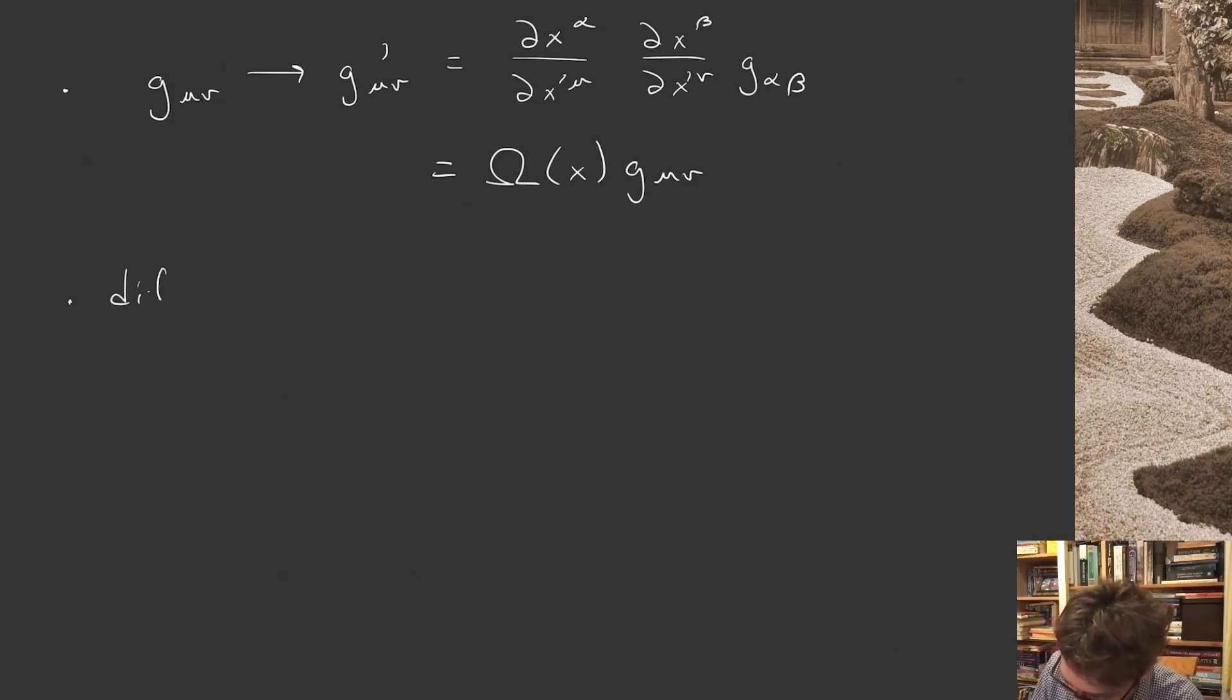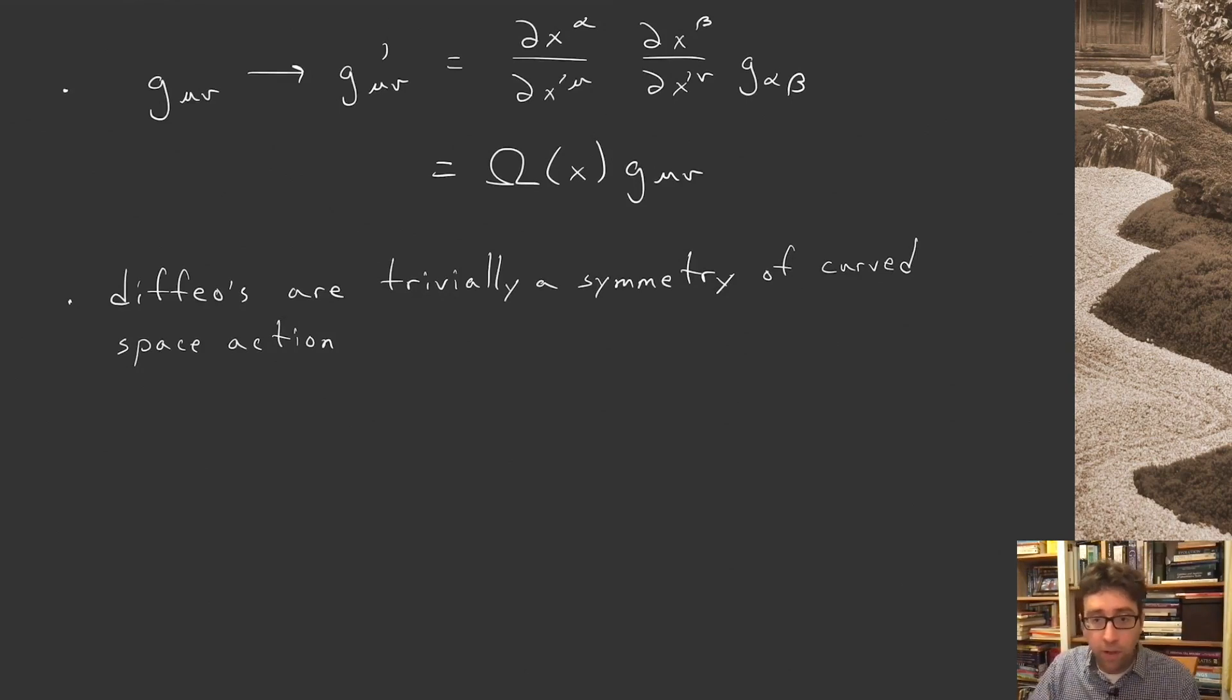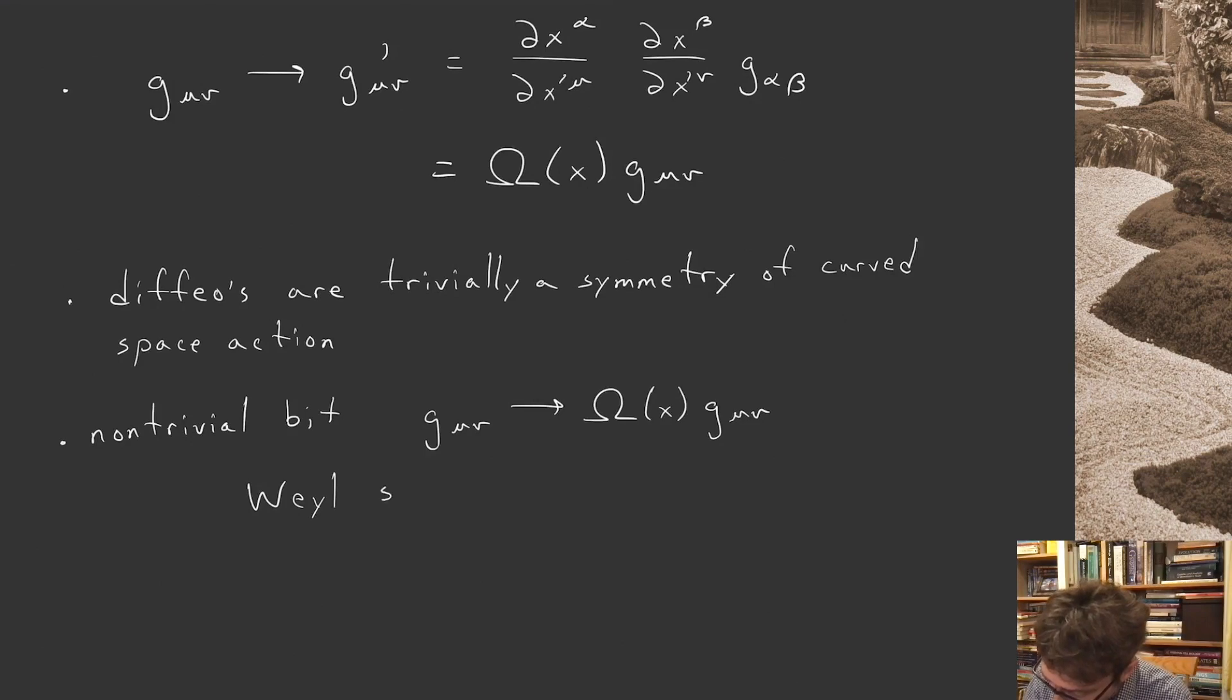These diffeomorphisms are trivially a symmetry once we lift our flat space action to curved space in this particular way. The non-trivial bit left over is the rescaling, sending g_μν to Ω(x) g_μν. This is Weyl symmetry or Weyl scaling. If they have Weyl symmetry in the curved space case, then classically they should have conformal symmetry in the flat space context.